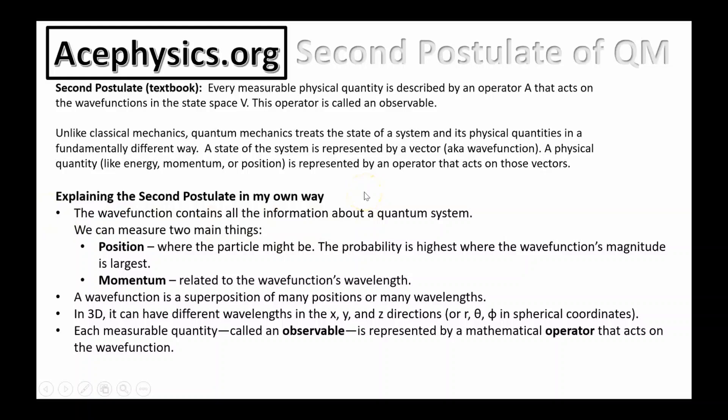Now I'll explain the second postulate in my own words, and I'll show you an animation on the next slide. The wave function contains all the information about the quantum system. We can measure two main things: position, where the particle might be - the probability is the highest where the wave function's magnitude is the largest, that's where the complex number has the largest length; and momentum, which is related to the wave function's wavelength.